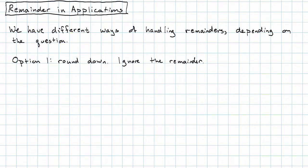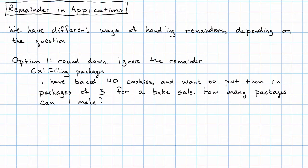One option we might use is to just round down and ignore the remainder. An example of a place where we might do this is where we're filling packages. Suppose I baked 40 cookies and want to put them in packages of 3 for a bake sale. How many packages can I make?